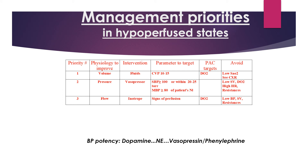To alter flow, give inotropes. Look at signs of perfusion and oxygen delivery (DO2), and avoid low blood pressure. Vasopressor agents include dopamine, norepinephrine, and phenylephrine.